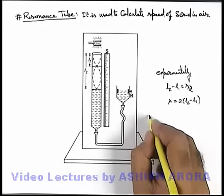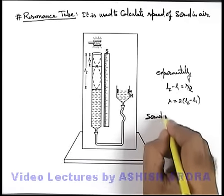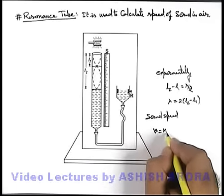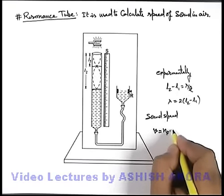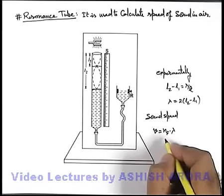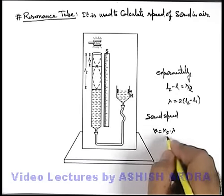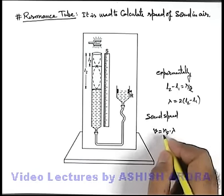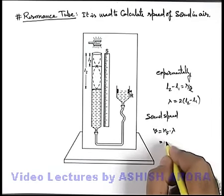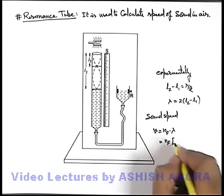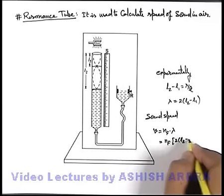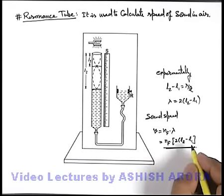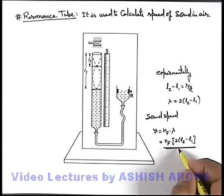From here we can find out the sound speed, by using the relation: speed equals frequency of tuning fork multiplied by wavelength. The frequency of the tuning fork is already embossed on it and is known. So it can be given as frequency of fork multiplied by twice of L2 minus L1. This is the expression by which we can find out the speed of sound in air.